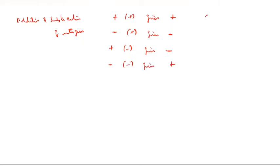For example, 4 plus 3: this is positive and this is also positive, so the answer is 7. For negative plus positive, you can write it as: minus 4 plus 3.